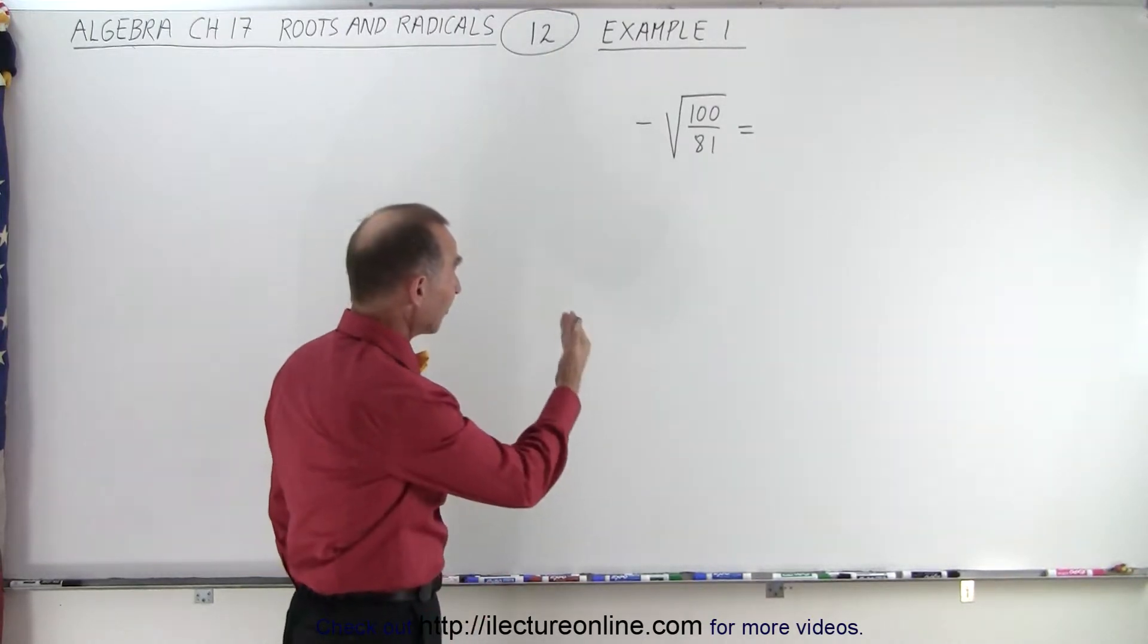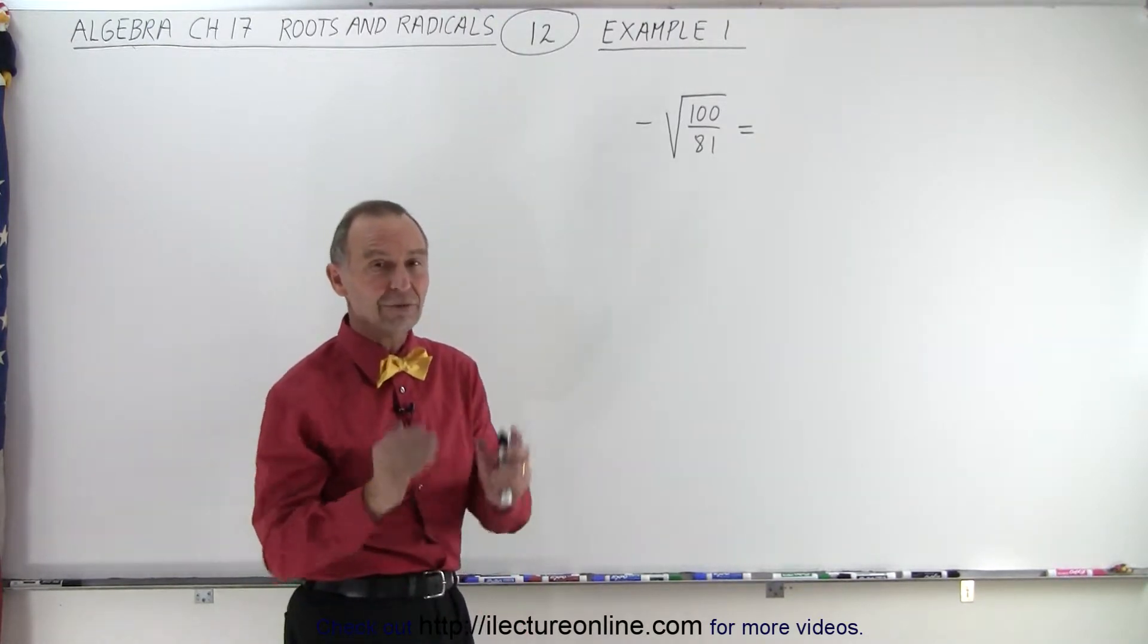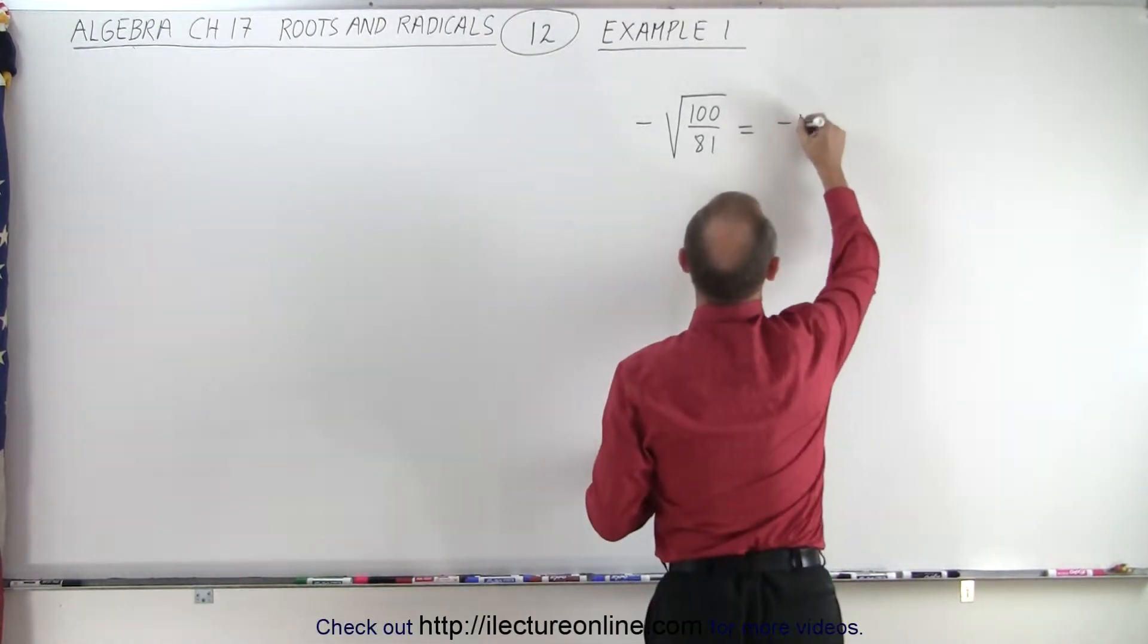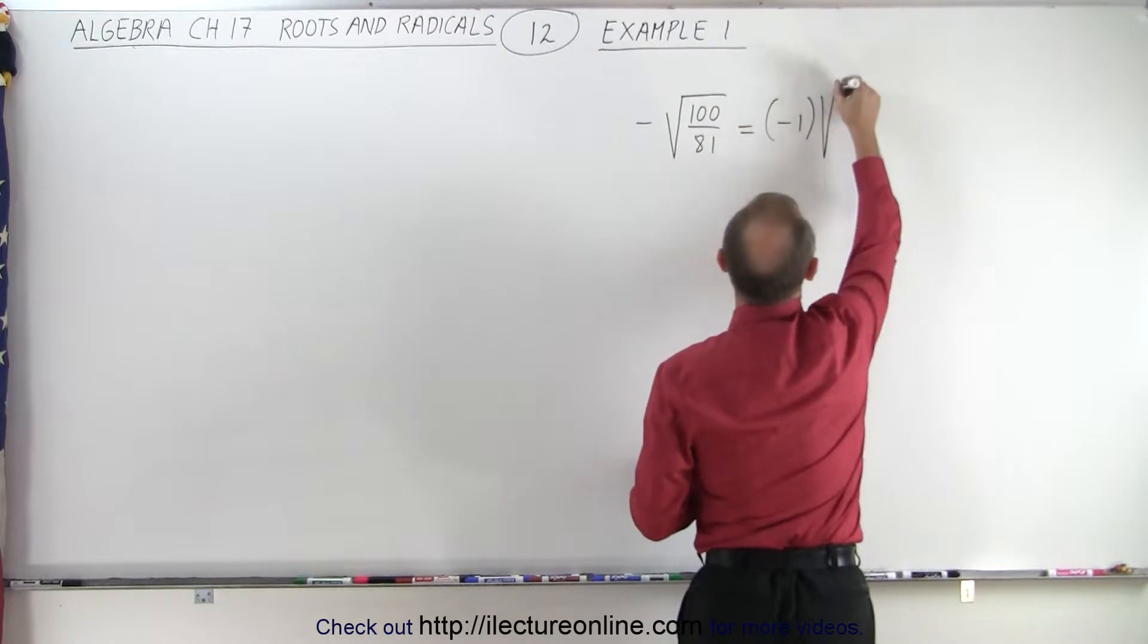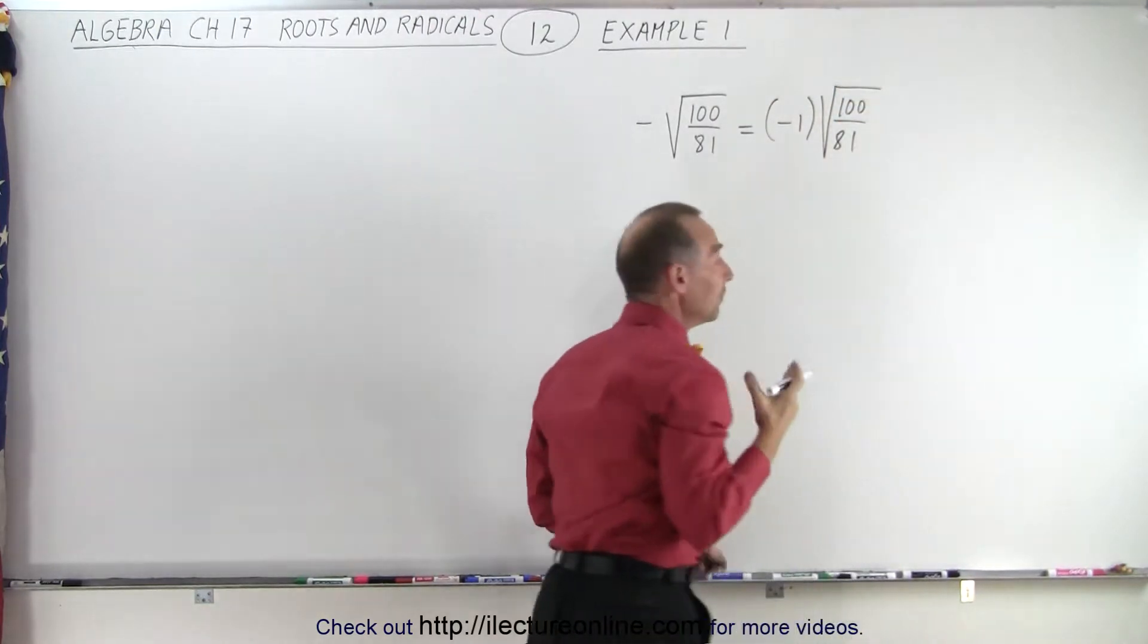So when you see a negative in front of a radical, what does that really mean? In essence, it means that you have the number negative 1 multiplied with the radical. So this is negative 1 multiplied times the square root of 100 divided by 81.